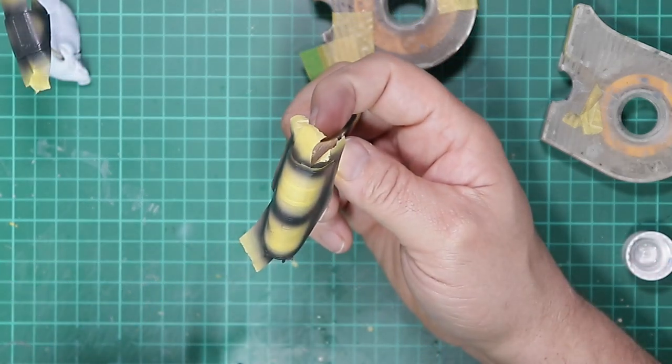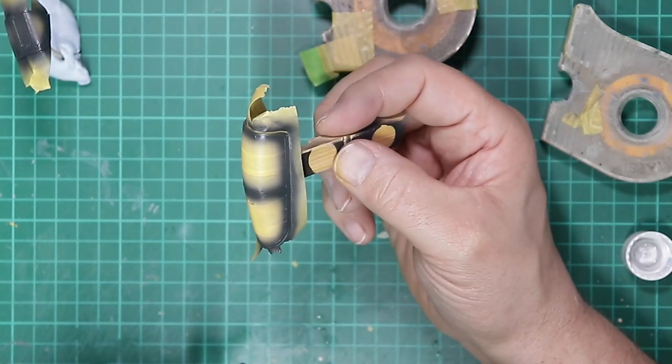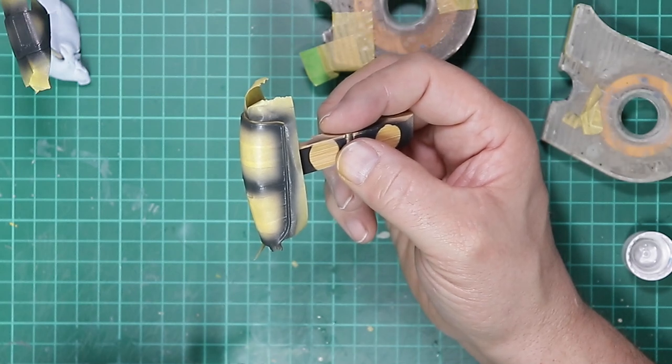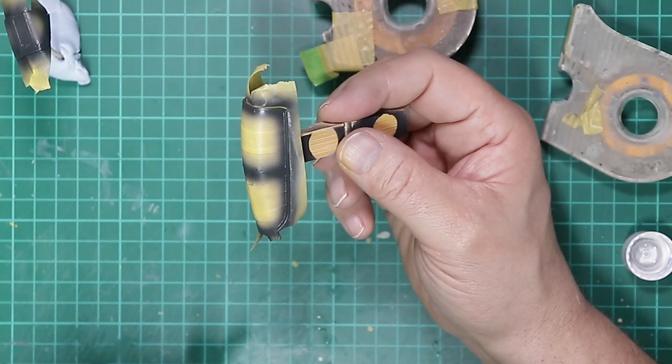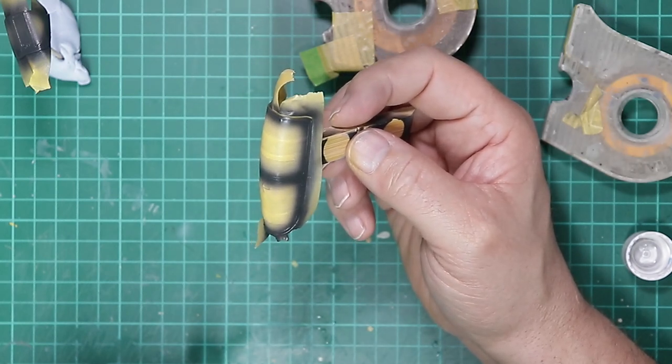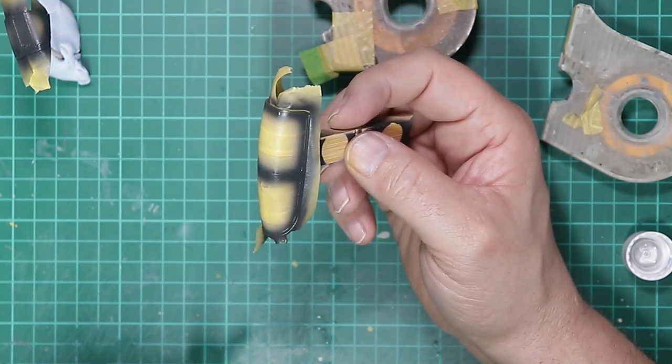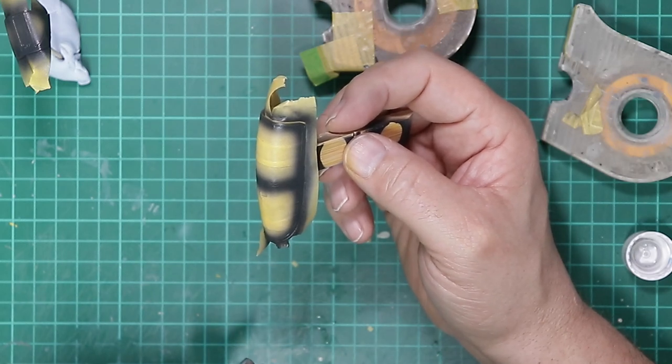So now that the black is dry, we're just going to give it a quick coat of the MRP grey primer, just to match the undercoat that was given to the main model. And then once we start applying the camo colors to the canopy, it's not going to look a shade different.